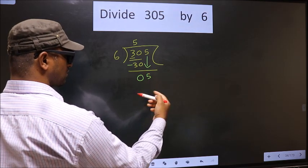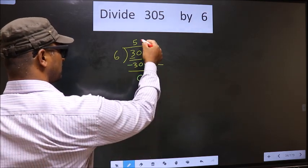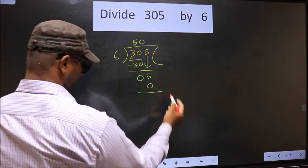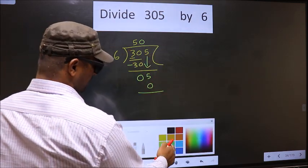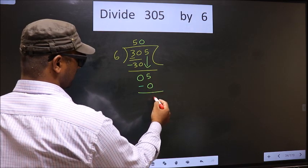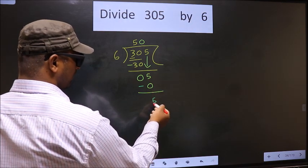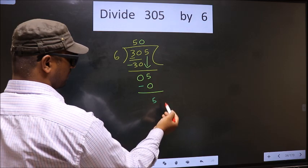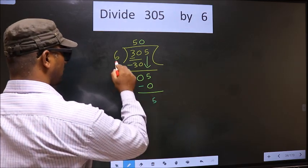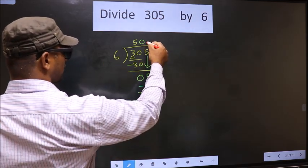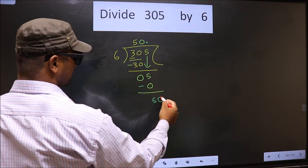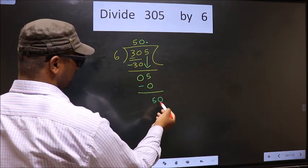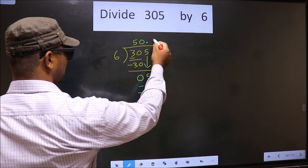So what we do is write 0 in the quotient. 6 × 0 = 0. Subtract: 5 minus 0 = 5. Now we did not bring any number down, and 5 is still smaller than 6 — so now you put a decimal point and take a 0. Now we have 50.